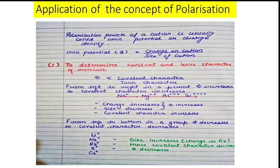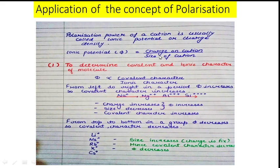Now, the most important application of the concept of polarization: the polarization power of a cation is usually called ionic potential, also known as charge density. Ionic potential is represented by the symbol phi (φ), where φ = charge / size. Phi is directly proportional to the charge on the cation, while it is inversely proportional to the size of the cation.